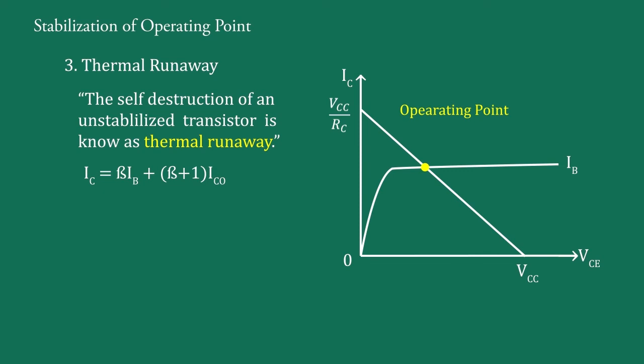The collector leakage current ICO strongly depends on temperature. The flow of collector current produces heat within the transistor, which raises the temperature of the transistor. If ICO increases, the collector current IC increases by beta plus one ICO. The increased IC will raise the temperature of the transistor, which in turn will cause ICO to increase. This effect is cumulative, and within a few seconds the collector current may become very large.